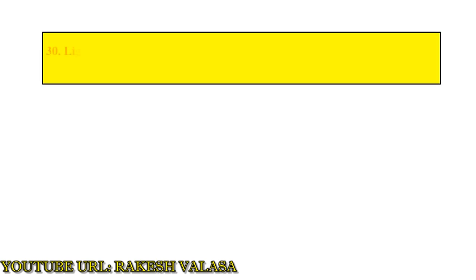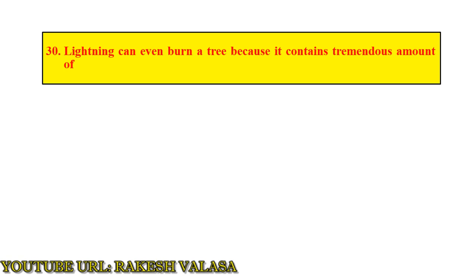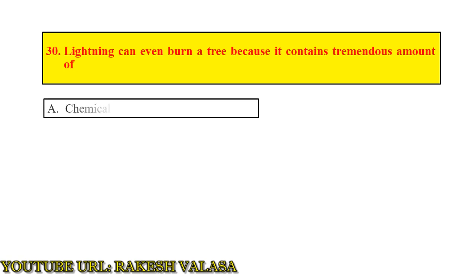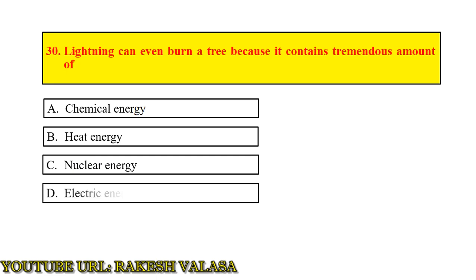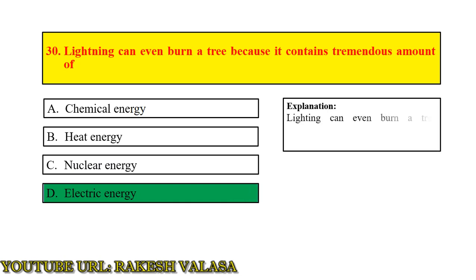Question number 30: Lightning can even burn a tree because it contains a tremendous amount of — Answer: Electric energy. Explanation: Lightning can even burn a tree because it contains a tremendous amount of electric energy.